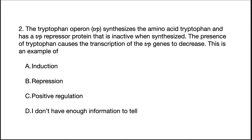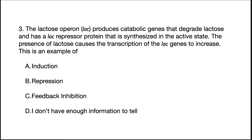Let's test your understanding of what we just went through. The tryptophan operon synthesizes the amino acid tryptophan and has a trp repressor protein that is inactive when synthesized. The presence of tryptophan causes the transcription of the trp genes to decrease. This is an example of what? Second question: the lactose operon produces catabolic genes that degrade lactose and has a lac repressor protein that is synthesized in the active state. The presence of lactose causes transcription of the lac genes to increase. This is an example of what?